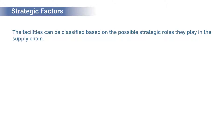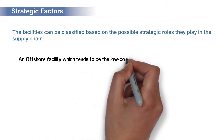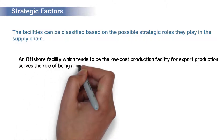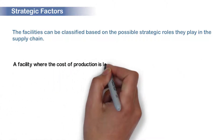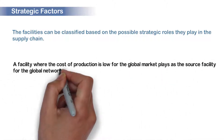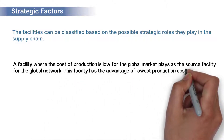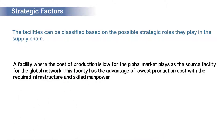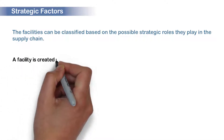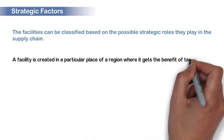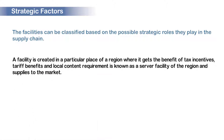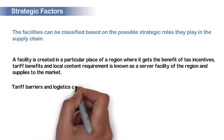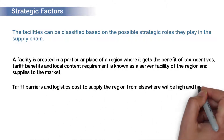The facilities can be classified based on the possible strategic roles they play in a supply chain. An offshore facility, which tends to be the low cost production facility for export production, serves the role of being a low cost supply source for markets which are located outside the country. A facility where the cost of production is low for the global market plays as the source facility for the global network, with the advantage of lowest production cost with the required infrastructure and skilled manpower. A facility created in a particular region that gets the benefit of tax incentives, tariff benefits, and local content requirement is known as a server facility of the region and supplies to the market.